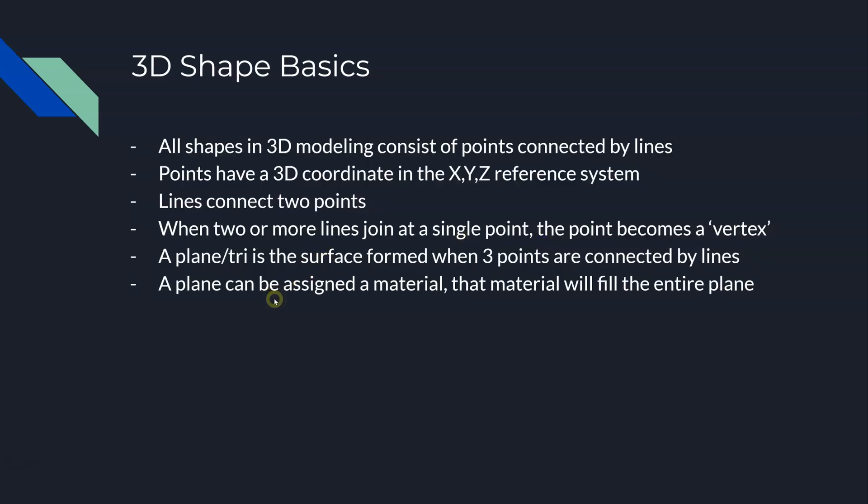In order to understand what's happening in Blender — how blends work, how vertices work, and vertex painting — it's important to understand some basic 3D shape concepts. First of all, in 3D modeling, all shapes consist of points. A point is the most basic function of 3D modeling — it is simply a reference to a point in space on the XYZ coordinate system.